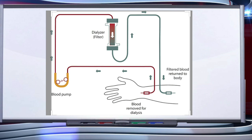The dialyzing unit contains a coiled cellophane tube surrounded by a fluid known as dialyzing fluid, having the same composition as that of plasma except for the nitrogenous waste. The porous cellophane membrane of the tube allows the passage of molecules based on concentration gradient. As nitrogenous wastes are absent in the dialyzing fluid, these substances readily move out, thereby clearing the blood. The cleared blood is pumped back to the body through a vein after adding anti-heparin to it.